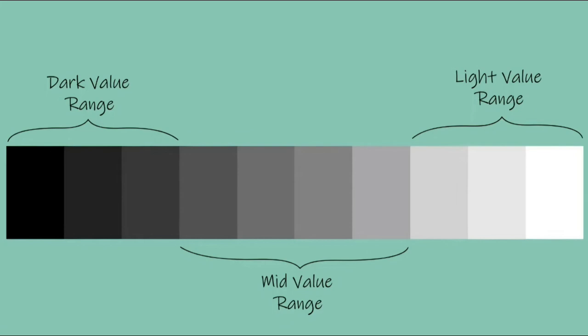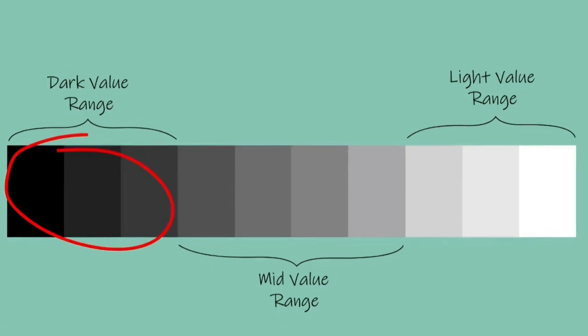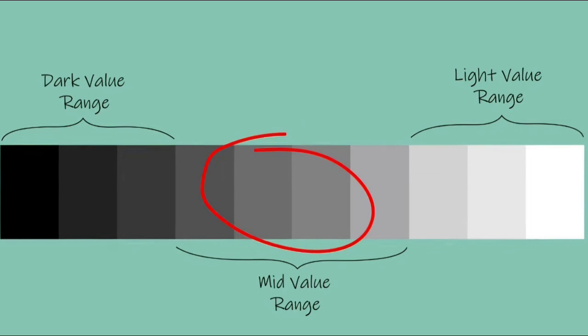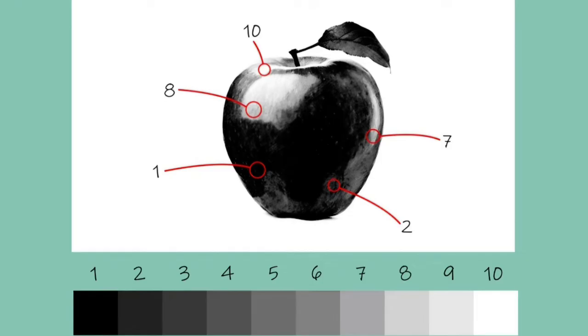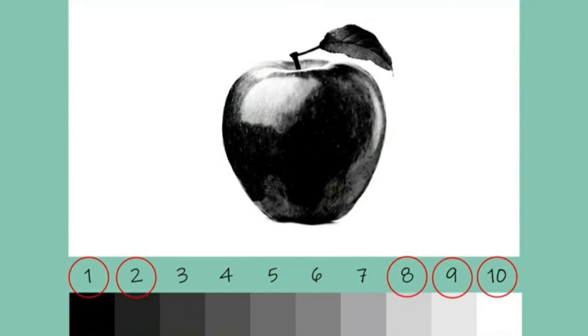However, not all artworks do this. Whether it's intentional or unintentional, a lot of artworks only tend to use certain sections of the value scale. When we look at the value scale in more depth, we can break it down into three sections: the dark value range, the mid value range, and the light value range. Now let's look at this apple, which only uses various numbers from the value scale.